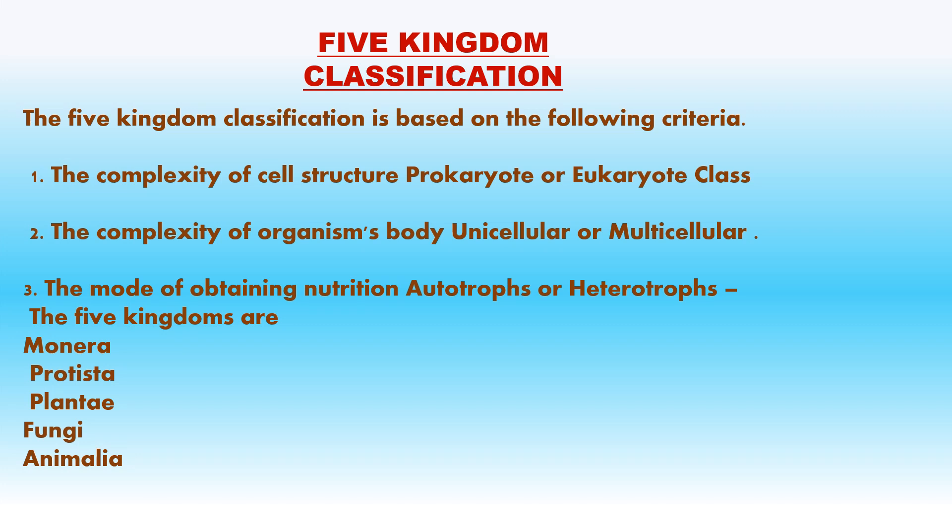Five Kingdom Classification was proposed by Whittaker in 1969. It is based on the following criteria: the complexity of cell structure (prokaryote or eukaryote); the complexity of organism's body (unicellular or multicellular); and the mode of obtaining nutrition (autotrophs or heterotrophs). The Five Kingdoms are: Monera, Protista, Plantae, Fungi, and Animalia.